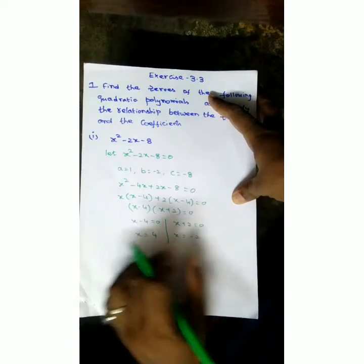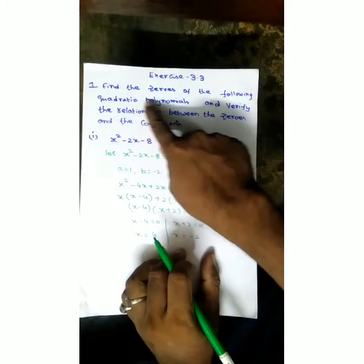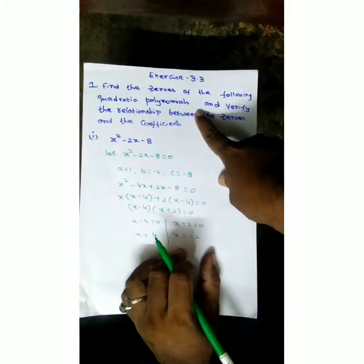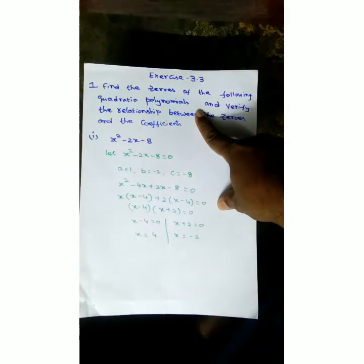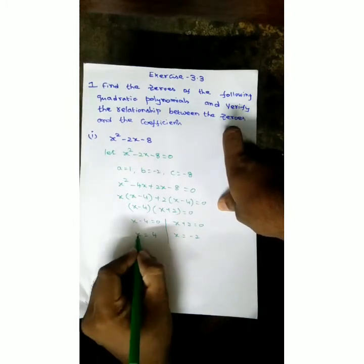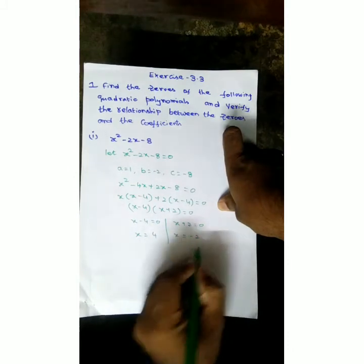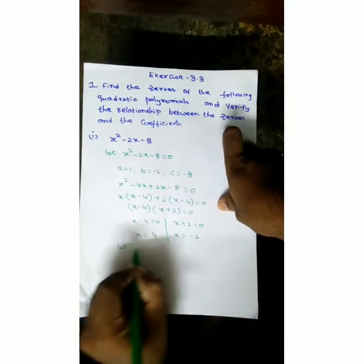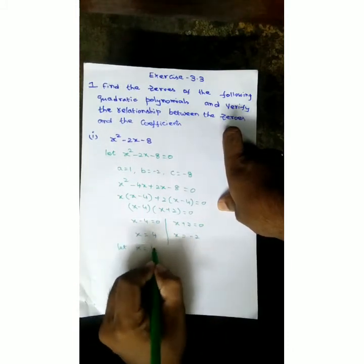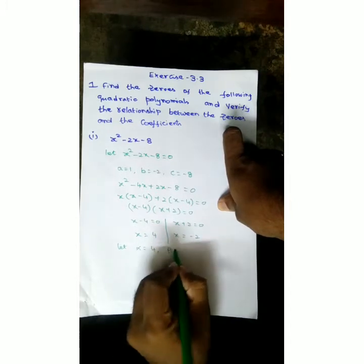So we have 2 zeros: 4 and minus 2. The question asks to find the zeros of the quadratic polynomial. First part, the zeros. Now we have to verify the relationship. Let alpha and beta be the zeros. Alpha is the first zero, 4. Second zero is minus 2. Let alpha is equal to 4, beta is equal to minus 2.